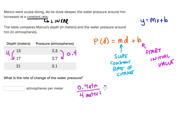Now we can simplify this rate to 0.1 atmospheres every 1 meter. In fact, I think that's what the question is actually asking for. What is the rate of change of the water pressure? And we found it—it is 0.1 atmospheres per meter.